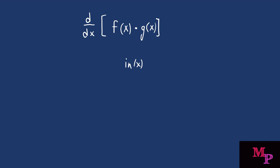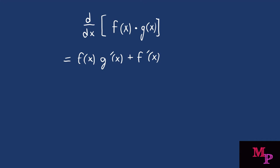The product rule states that whenever you're taking the derivative of two products, it is equal to your first function f(x) times the derivative of your second function, plus the derivative of your first function times your second function. Here's just another way of writing it.